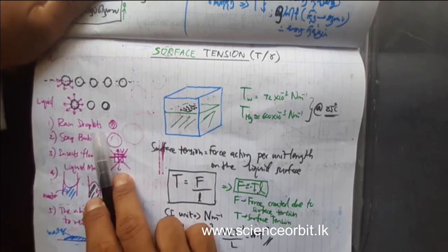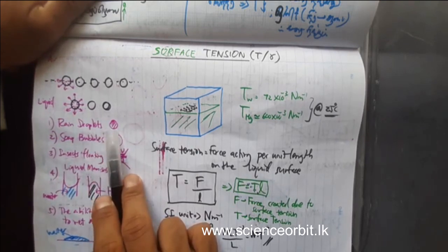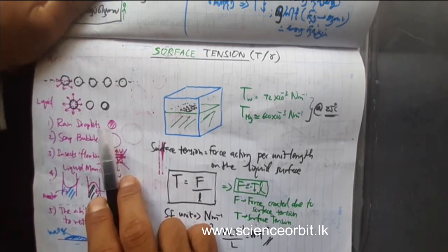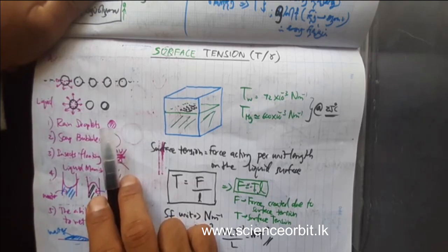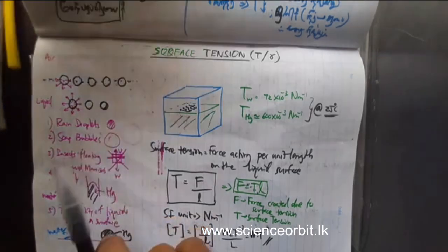Why are rain droplets spherical in shape? Why not a cube? Why not a cone? Why not a pyramidal shape? So let us see.